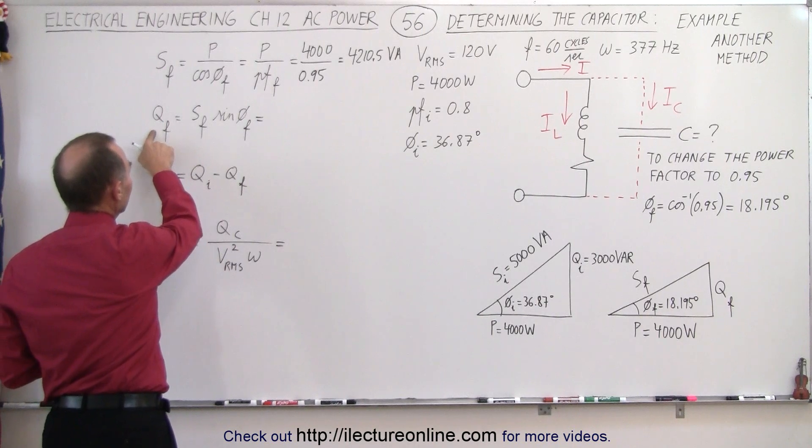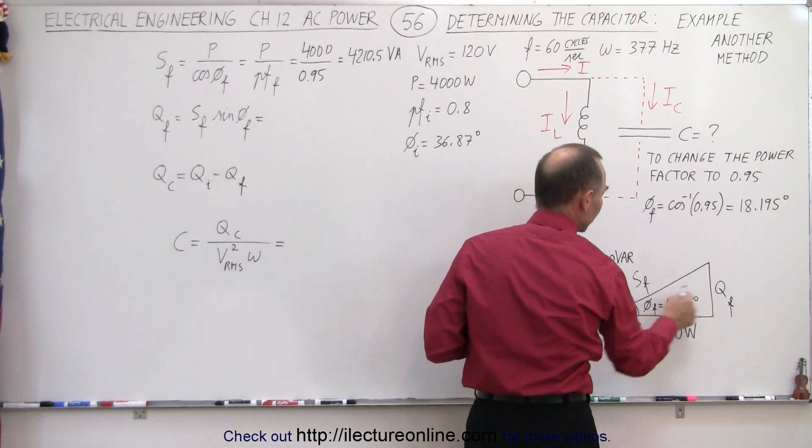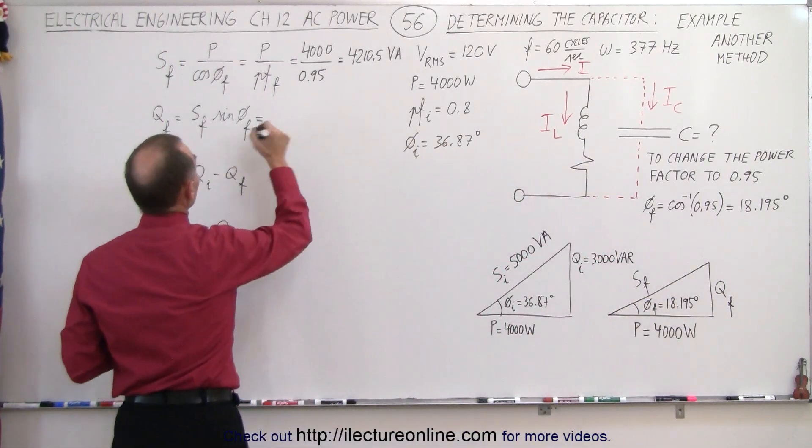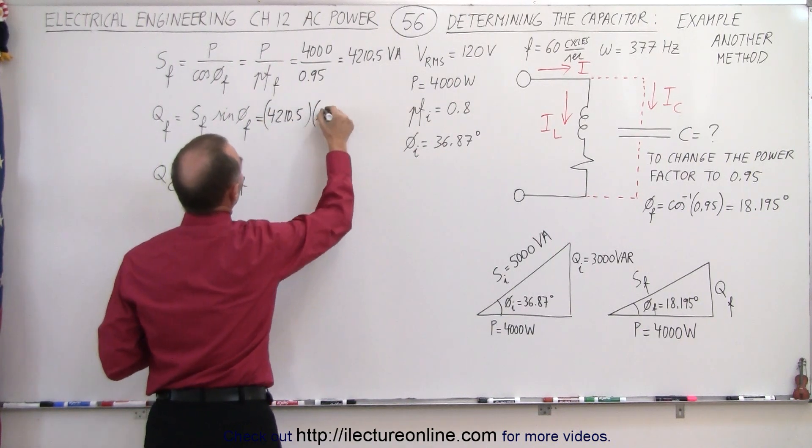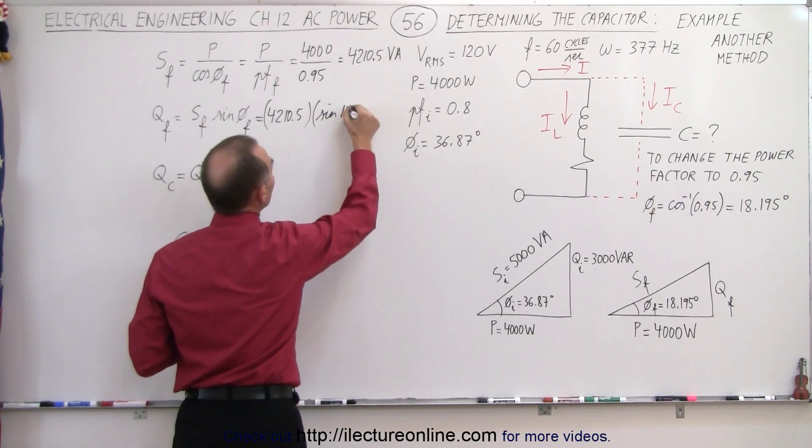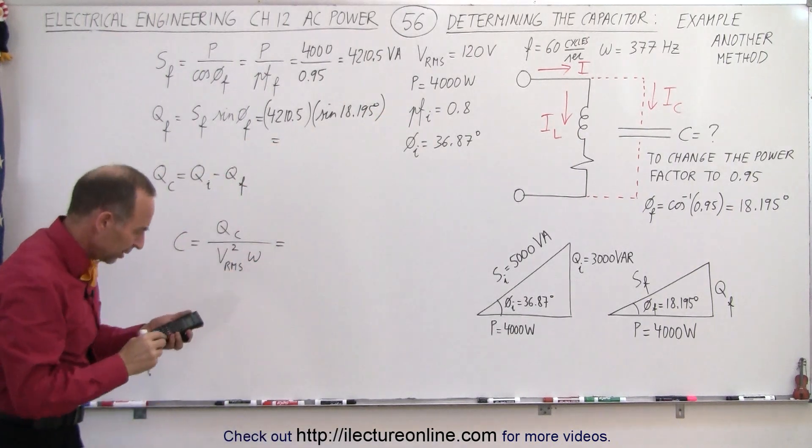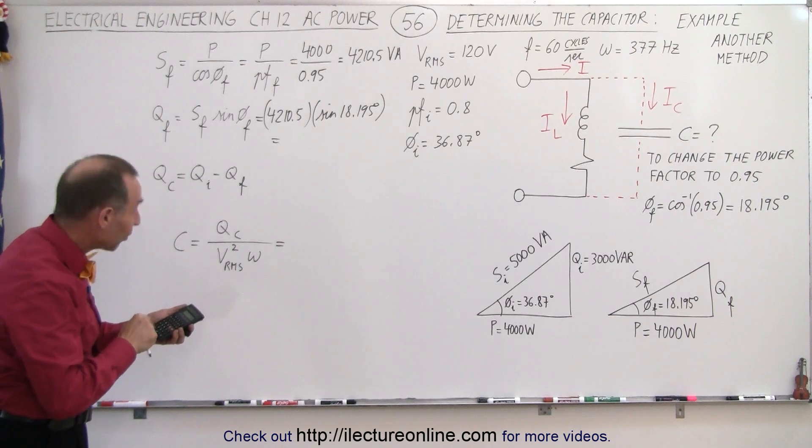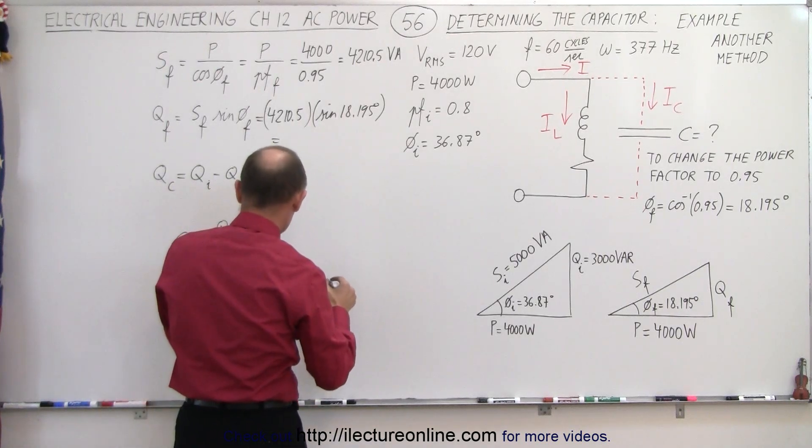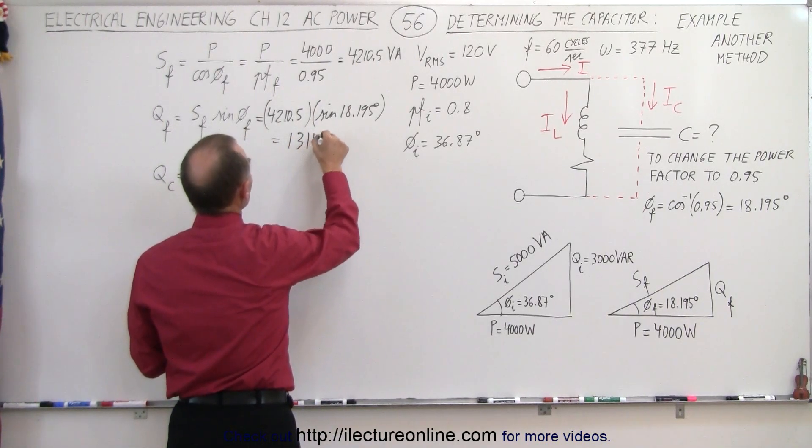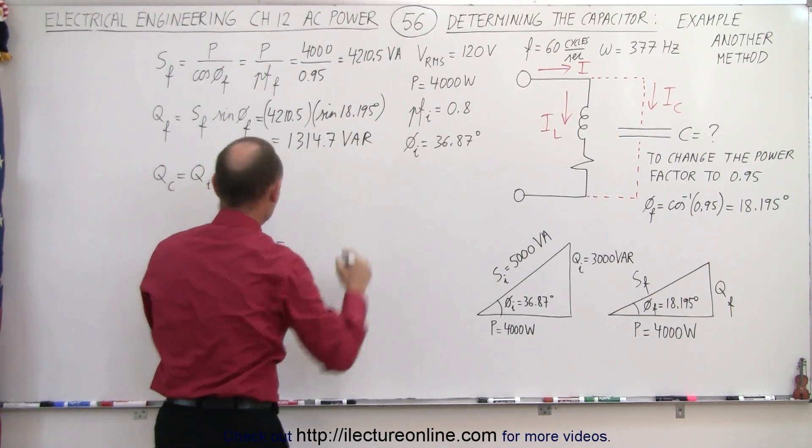How about the final reactive power? Well, what we can see here is that this is related to the final complex power times the sine of the angle. So that means we take SF final, which we just found, 4210.5, multiply it times the sine of the new angle, which is 18.195 degrees. And so that gives us a new reactive power. So times 18.195, take the sine of that, gives us 1314.7 VAR, volt ampere reactive.